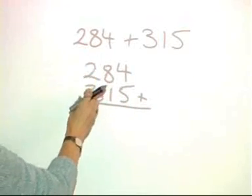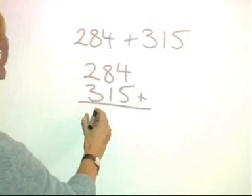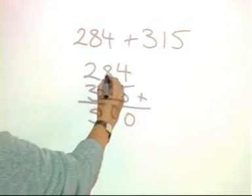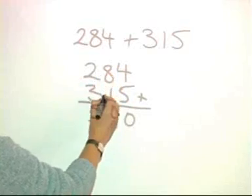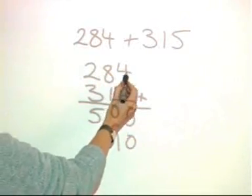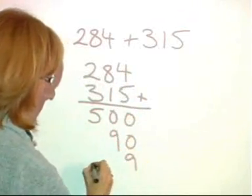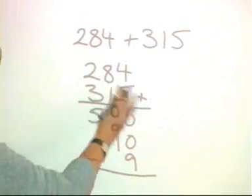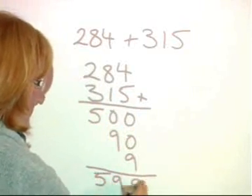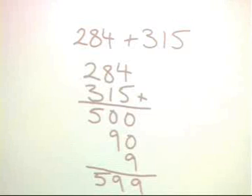And then we can add the hundreds. So 200 and 300 add together to get 500. The tens, 80 and 10 gives us 90. And then the units, 4 and 5 add together to get 9. Add the whole lot together and we get 599.